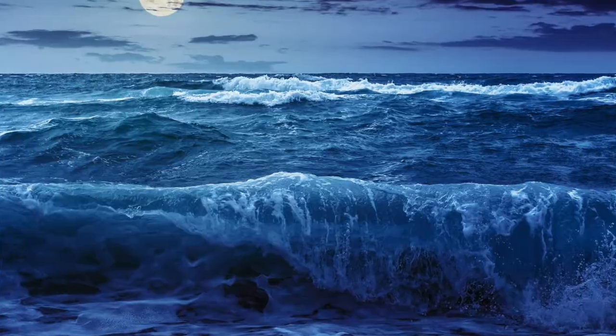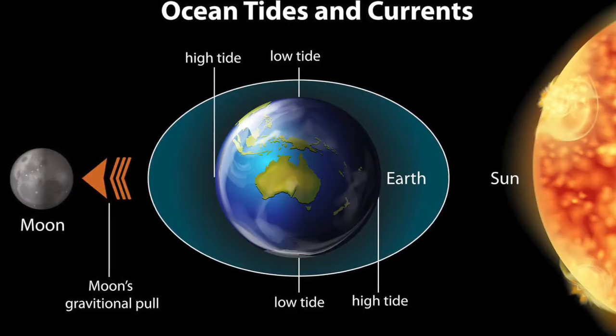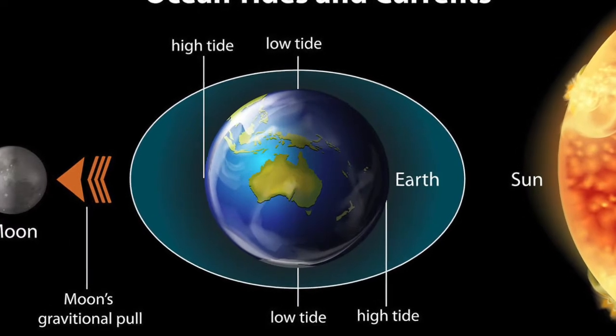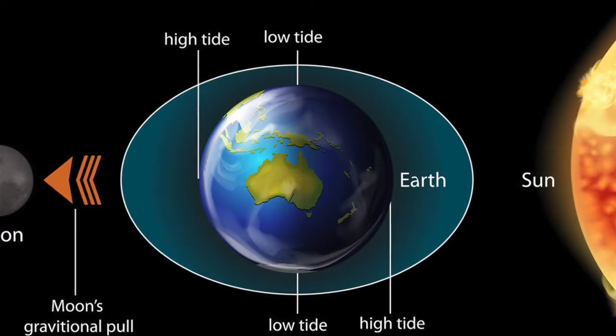If the moon causes a high tide on one side of the earth, what causes the high tide on the other side? That is the earth's effect on it. The earth is spinning, which is why we have night and day. The earth spinning means that another high tide occurs on the opposite side of the earth to the moon.